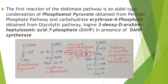This condensation of phosphoenolpyruvate and erythrose-4-phosphate gives 3-deoxy-D-arabino-heptulosonic acid 7-phosphate (DAHP) in the presence of DAHP synthetase.